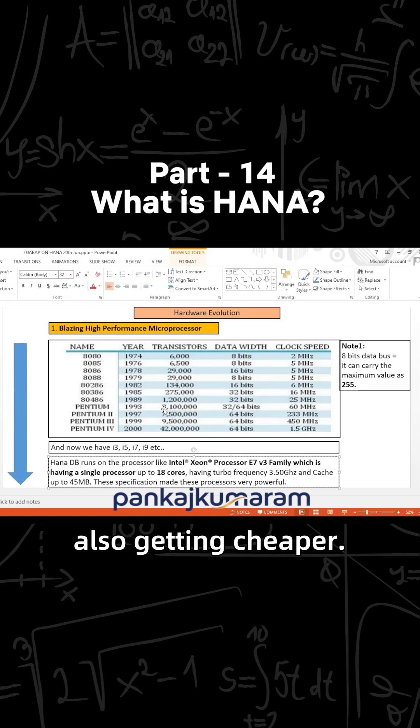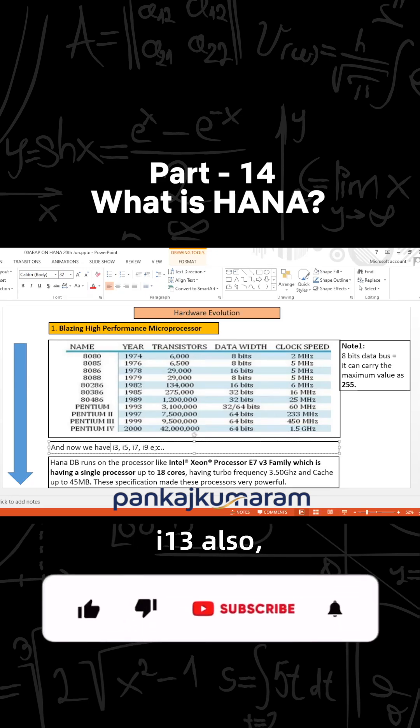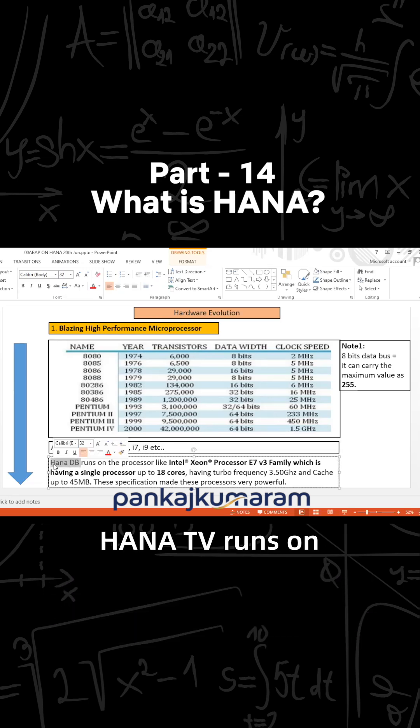This is very important - cost is getting cheaper. We have i3, i5, i7, i9, i13 also, I think i16 are also there. Then HANA DB runs on a processor like Intel Xeon processor P7 V3 family. This is a very powerful group of processors, a very powerful family.